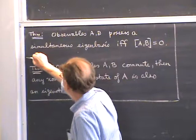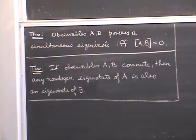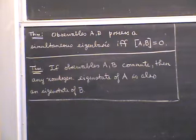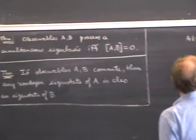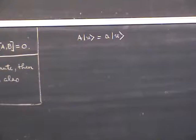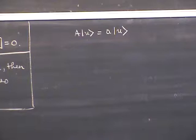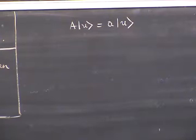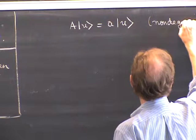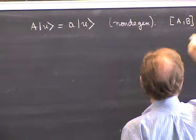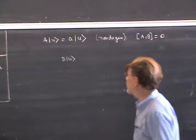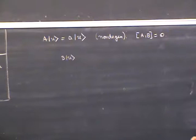There's a special case of this theorem, part B, which is a trivial extension but occurs so often that I want to make particular mention of it. It says that if you have two observables A and B which commute, then any non-degenerate eigenstate of A is also an eigenstate of B. Let's outline the proof. Suppose U is an eigenstate of A in the discrete spectrum, and A commutes with B. Then if I take B acting on U, I get something proportional to U — U is also an eigenvector of B.